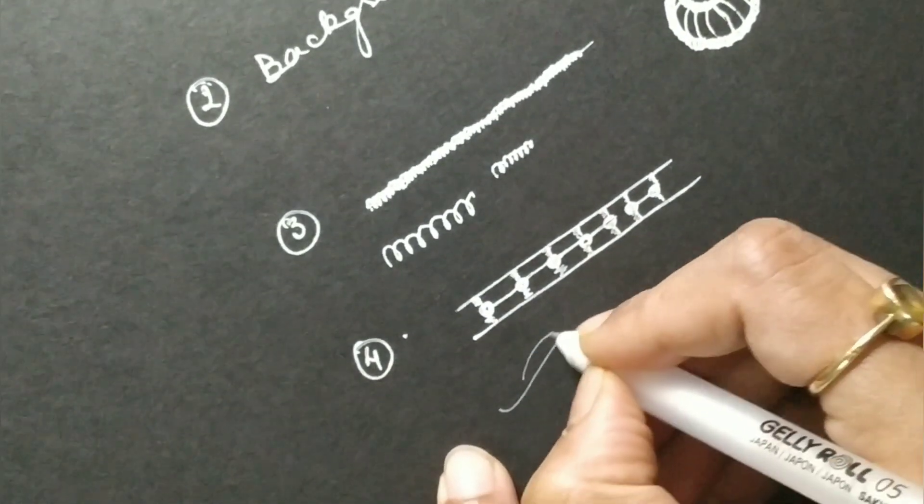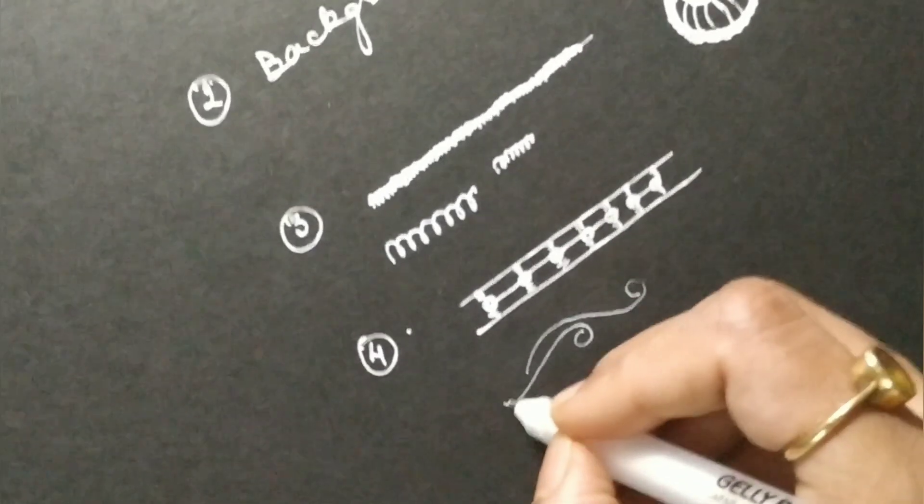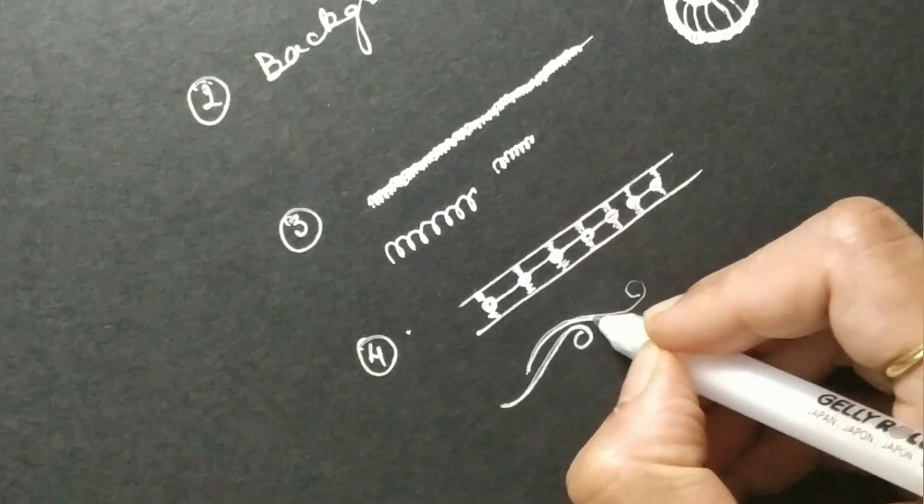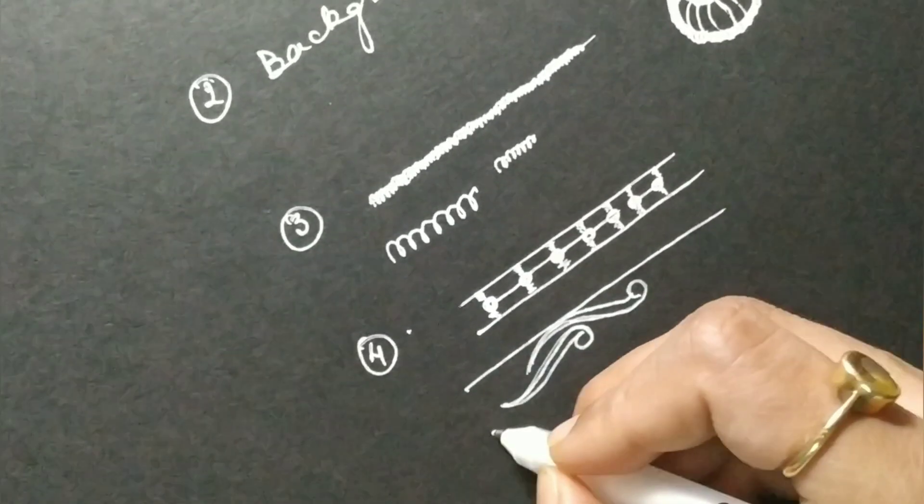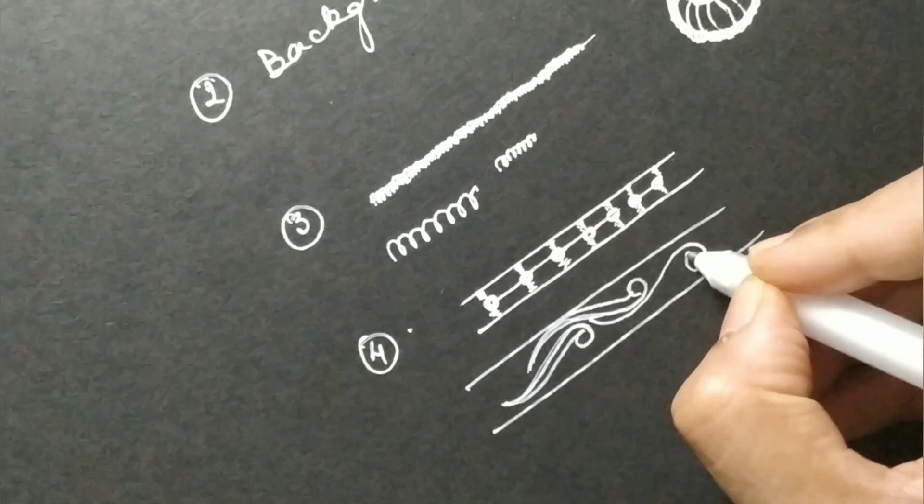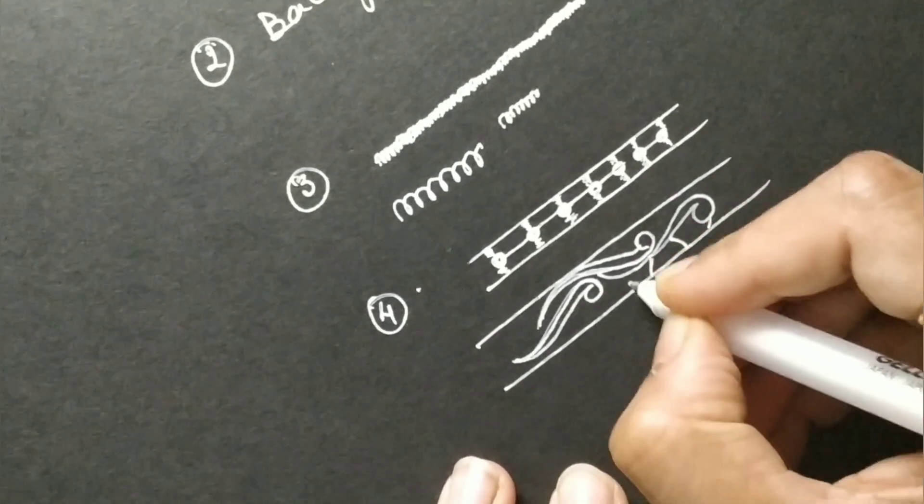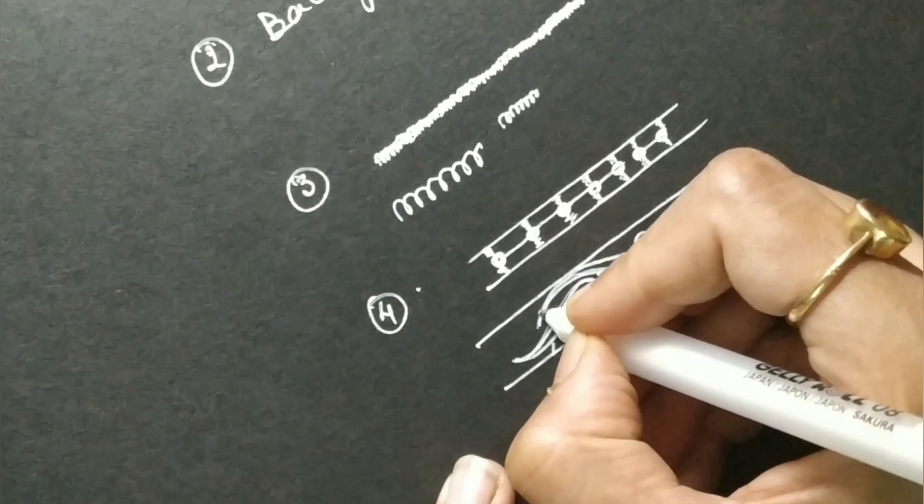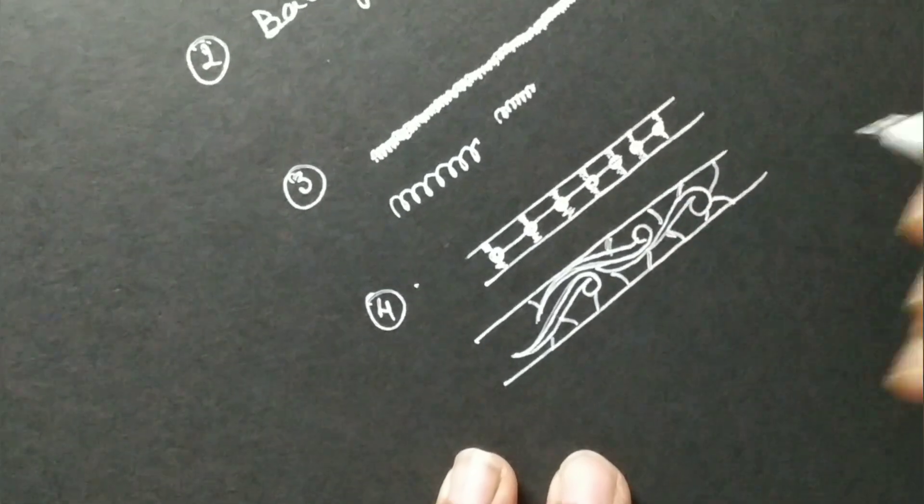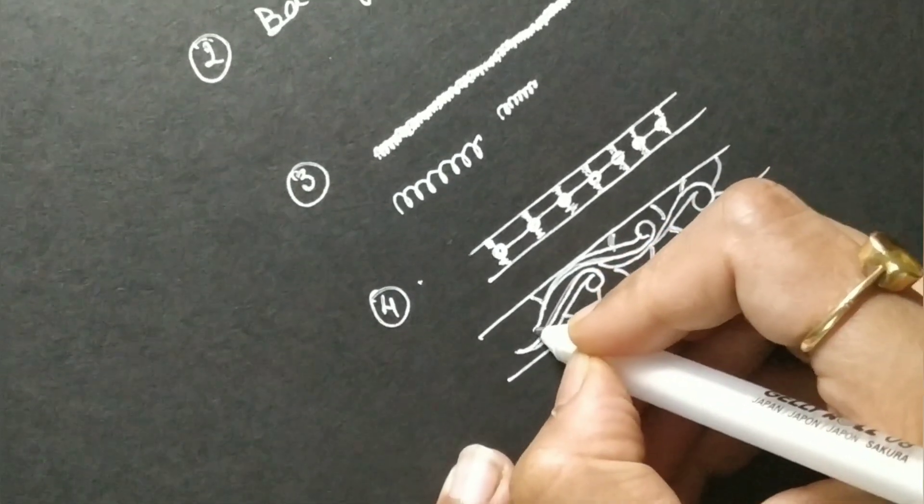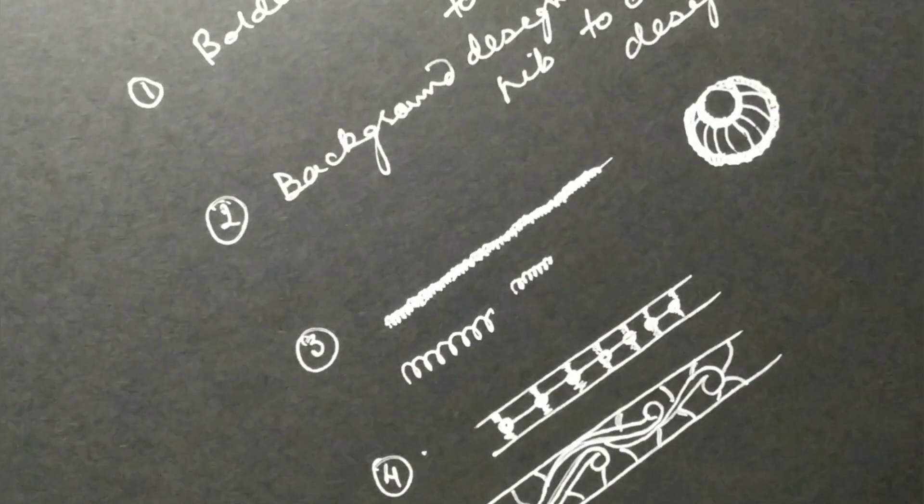Just in case you draw a shape like this, they cannot be hanging in the air. You have to connect it by drawing lines like this or some other way, connecting these shapes to the outer line. There has to be interlacing and interlinking of shapes. Every shape has to be connected with the border or the other adjoining shape.